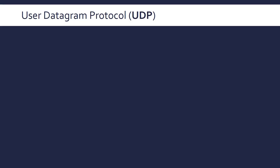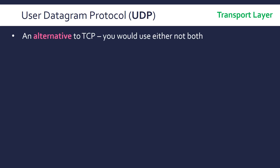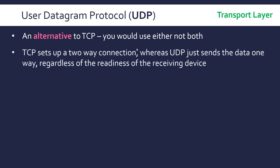The User Datagram Protocol, UDP, is an alternative to TCP and also operates at the transport layer. You would use either TCP or UDP — not both.